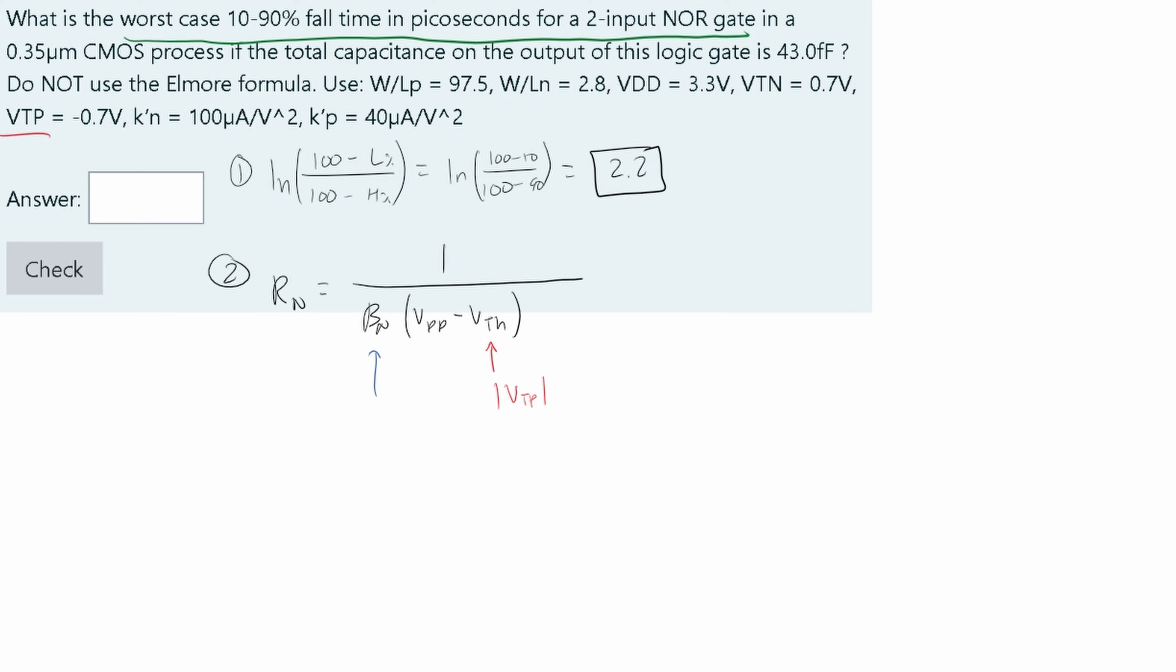Beta N is going to equal K prime N times W over LN. If it's P, you just switch the subscripts. For this specific problem, that gives me an RN equal to 1.37 times 10 to the 3 ohms.